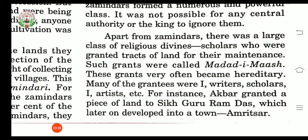Many of the grantees were writers, scholars and artists. For instance, Akbar granted a piece of land to Sikh Guru Ramdas, which later on developed into a town. In the present, it is called Amritsar.